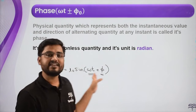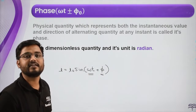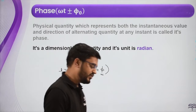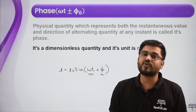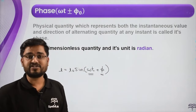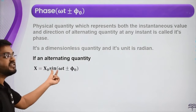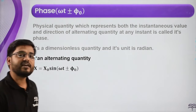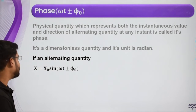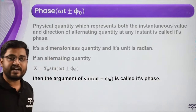So we say that the instantaneous magnitude as well as the direction are both decided by this angle, and this angle is called the phase. Phase is just an angle and angles are dimensionless quantities — they do not have dimensions. The SI unit is radian but since they are a ratio, they have no dimension. If the alternating quantity is x = x₀ sin(ωt ± φ₀), then ωt + φ₀ is called the phase.